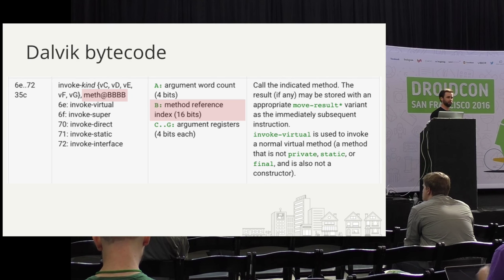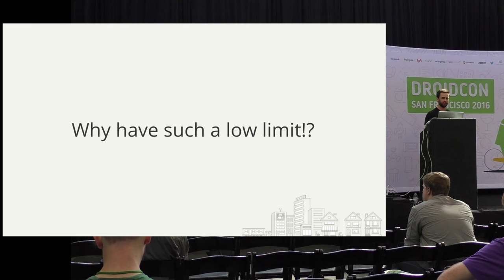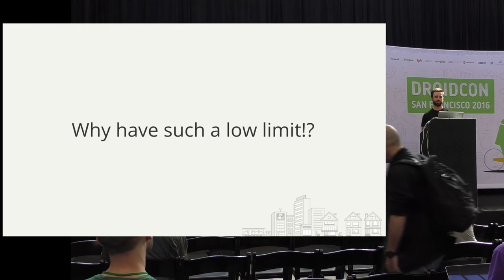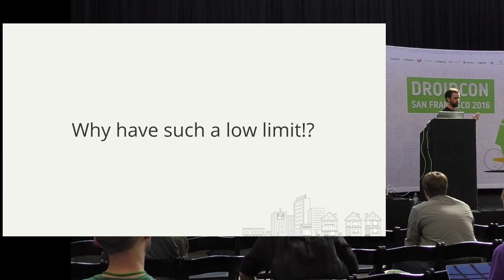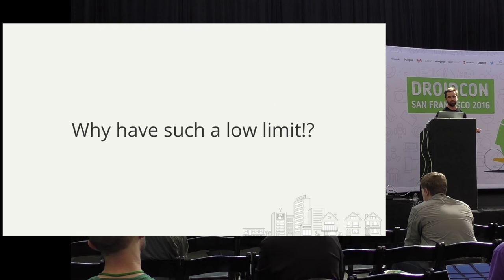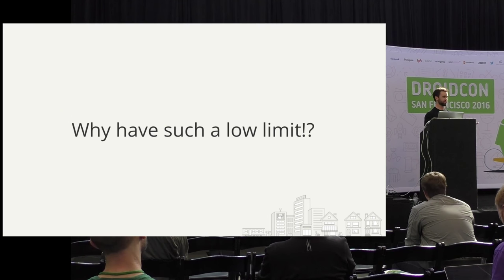So we can put more than 65K methods into a dex file, but we can't reference them. That kind of sucks. Why have such a low limit in the first place? I'd really recommend you check out Dan Bornstein's — the creator of Dalvik — AMA with the San Francisco Android Group. He gives a lot of context. Essentially, the marching order from the top down was to make this as performant as possible within reason. Given the devices they were seeing and the size of the apps internally, they didn't anticipate hitting this limit. We can all relate to this as programmers — poorly anticipating constraints for the future.